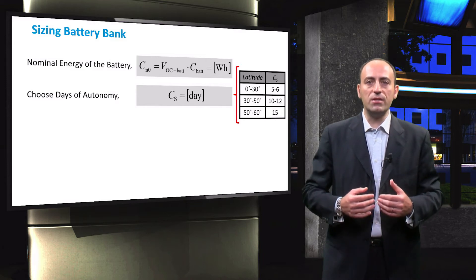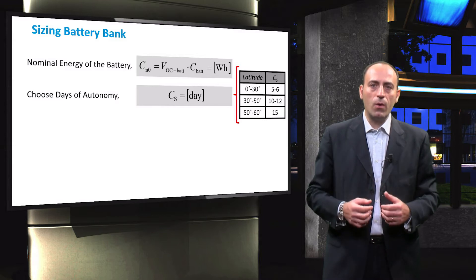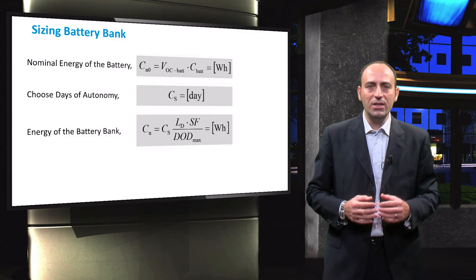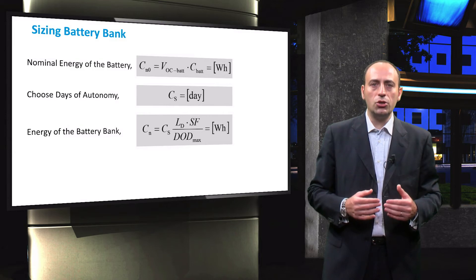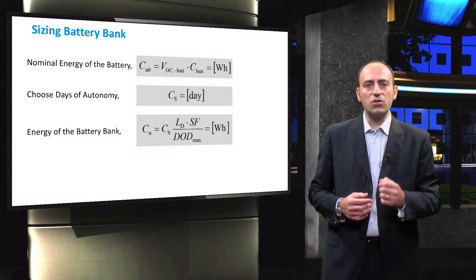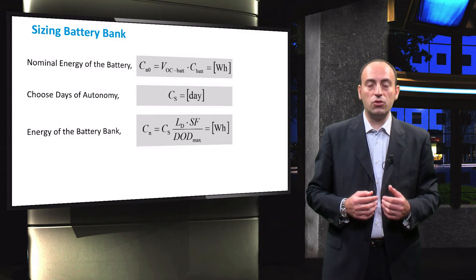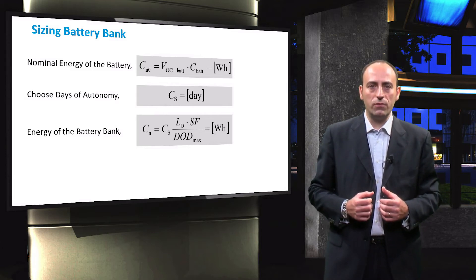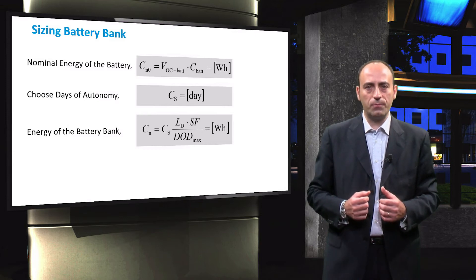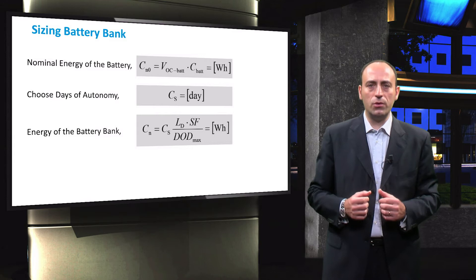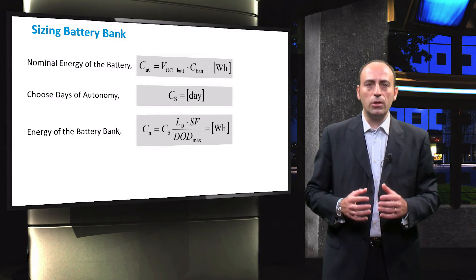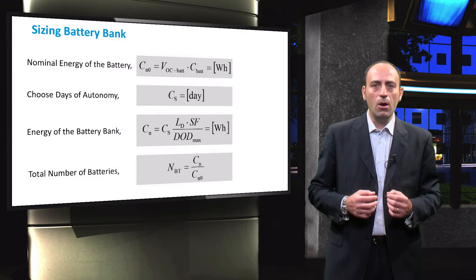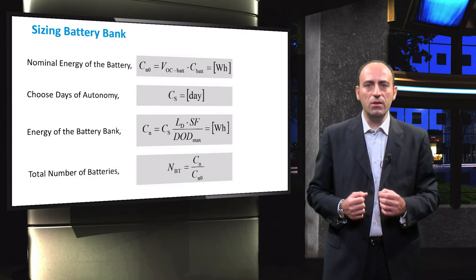The number of autonomous days increases for higher latitudes. Next, the required total energy of the battery bank, CN, is determined. It is calculated by dividing the product of the daily energy demand of the loads, the chosen autonomous days, and a sizing factor, SF, by the maximum depth of discharge, DOD max. Here, DOD max is the maximally allowed depth of discharge of the batteries in order to prolong battery life, and it is normally chosen between 20 to 30%. Finally, from CN, the total number of required batteries is calculated by dividing the total energy of the battery bank, CN, by the rated energy capacity, CN0, of a single battery.